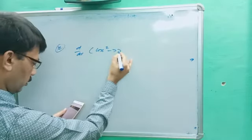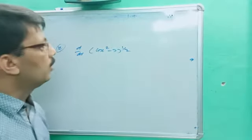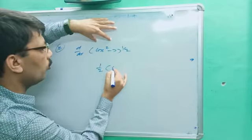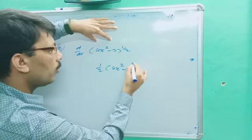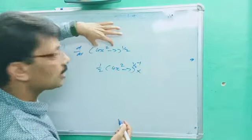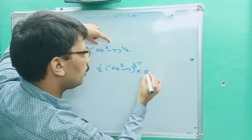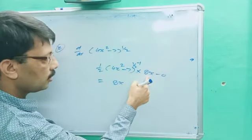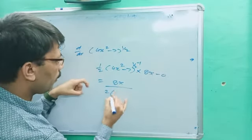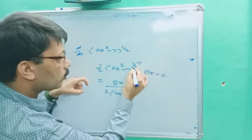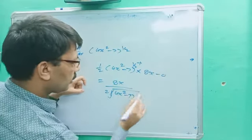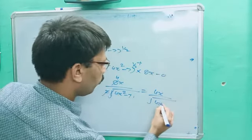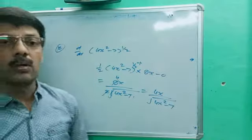Twelfth and last question: d/dx of (4x² - 7)^(1/2). First solve the power: bring down 1/2, giving 1/2 · (4x² - 7)^(1/2 - 1), then go inside the bracket. d/dx of 4x² is 8x and d/dx of -7 is 0. So we get 8x divided by 2, times (4x² - 7)^(-1/2), which simplifies to 4x divided by √(4x² - 7). That's all for today's differentiation.